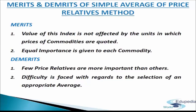The merits of the simple average of price relative method are: first, the index is not affected by the units in which prices are quoted, since price relatives are pure numbers independent of original units; second, equal importance is given to each commodity and extreme values do not unduly influence the index. The demerits are: first, as an unweighted index, it assigns equal importance to each price relative even though some are more important in practice; and second, there is difficulty in selecting an appropriate average.